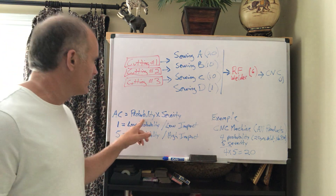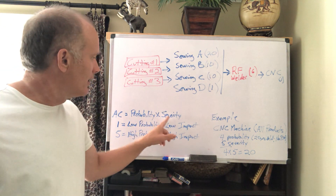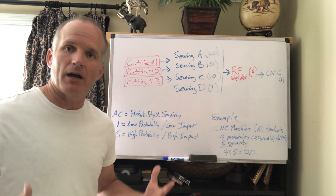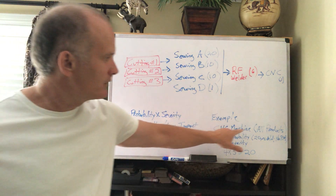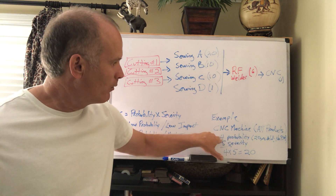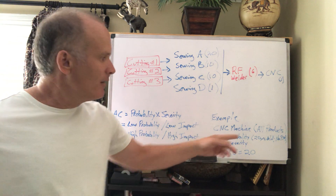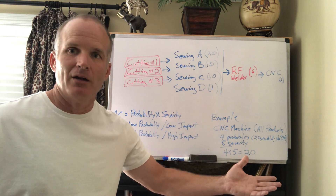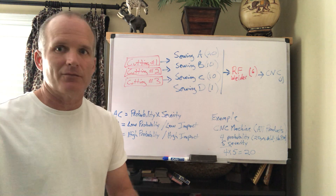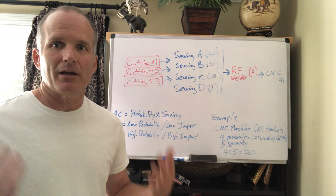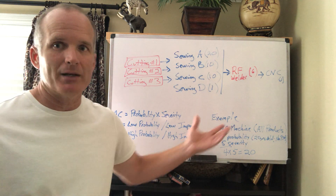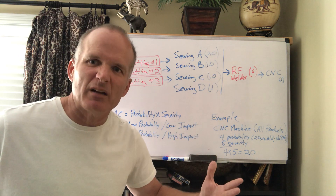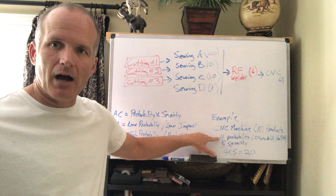Asset criticality is really just two numbers multiplied together: probability and severity. Probability is the likelihood of a defect, problem, or failure occurring. For the CNC machine, I gave it a four on a scale of one to five — it's a 20-year-old machine and we haven't been doing PMs on it. We just plug it in and it goes. The factory rep comes in once a year, but there's no operator care, no monthly maintenance. We don't feel good about how we've been taking care of it, so a four — you could argue five, but it's a high number either way.